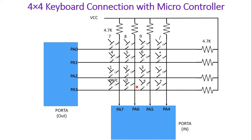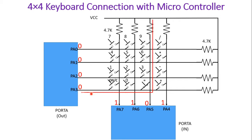There are total 16 keys arranged in a 4x4 matrix form. Initially, we send 0,0,0,0 on PA0 to PA3. If no key is pressed, the content read by PA4, PA5, PA6, PA7 will be 1,1,1,1. Now suppose you press the equals key — there is a short connection between the third column and last row, causing current to flow through PA3.